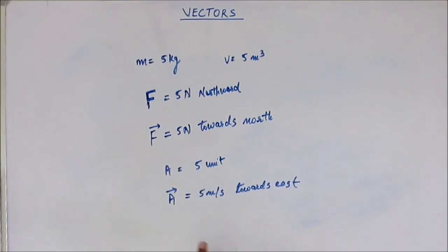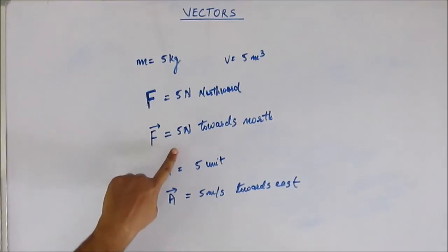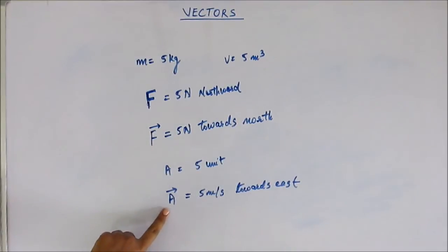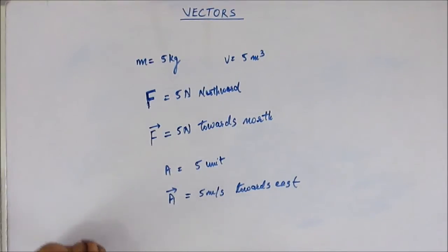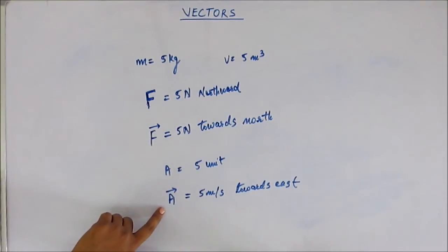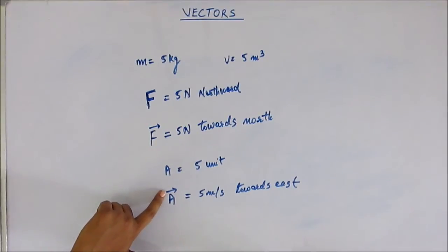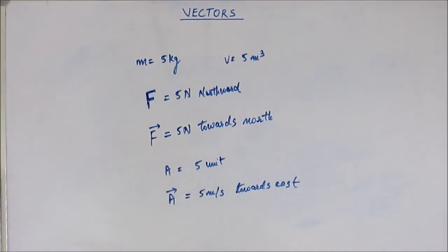So we write it as A with an arrow and read it as 'A vector'. We read it as F vector is equal to 5 Newton towards north, or A vector is equal to 5 meter per second towards east, whatever the direction is. The point is: for a scalar quantity we just use the letter; for a vector quantity we use the same letter but add an arrow at the top, and read it as A vector, B vector, or F vector.